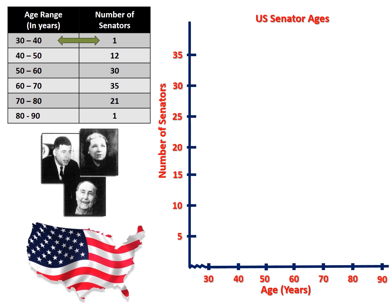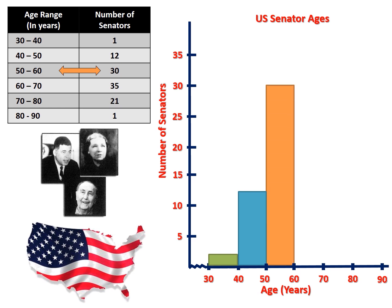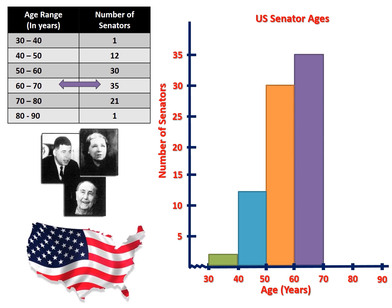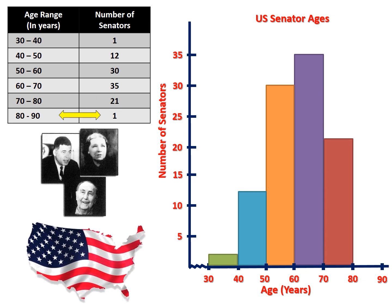We have 1 senator between the ages of 30 and 40. We have 12 senators between the ages of 40 and 50. We have 30 senators between 50 and 60. We have 35 senators between 60 and 70. We have 21 senators between 70 and 80, and 1 senator between 80 and 90.